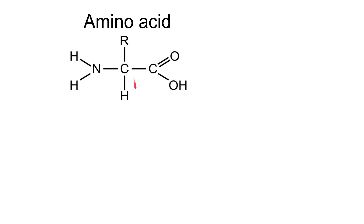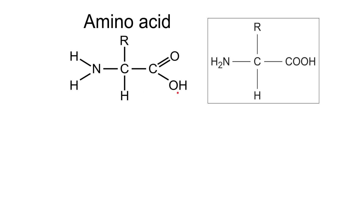You need to be able to draw an amino acid. You don't need to draw it to the most detailed level, although it might be useful. The structure in your specification that you need to be able to draw still has the NH2 amine group, the COOH carboxylic acid, a hydrogen, and the R group. This is the minimum level of detail required.